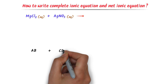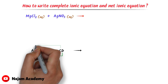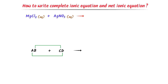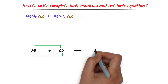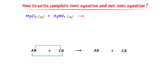According to this general reaction pattern, A will combine with D and C will combine with B, giving us AD plus CB. Similarly, the inner ions combine with the inner and outer combine with the outer. This is a double displacement reaction, also called a precipitation reaction.